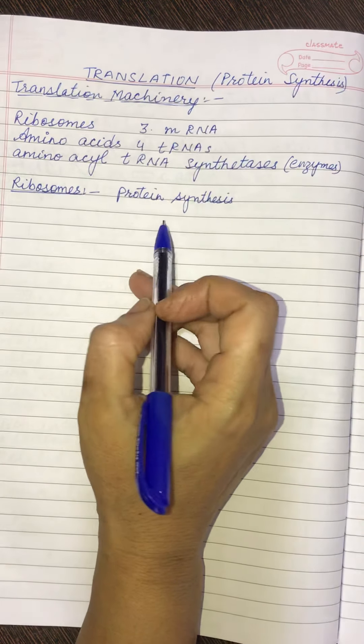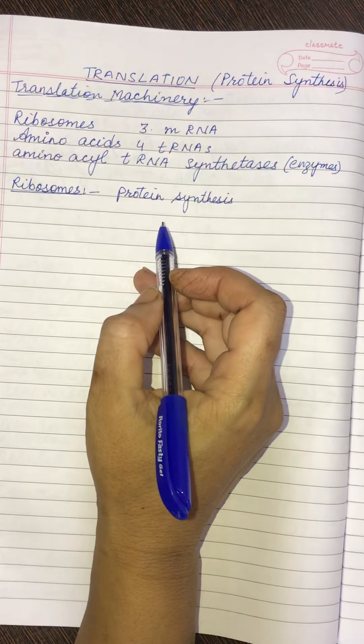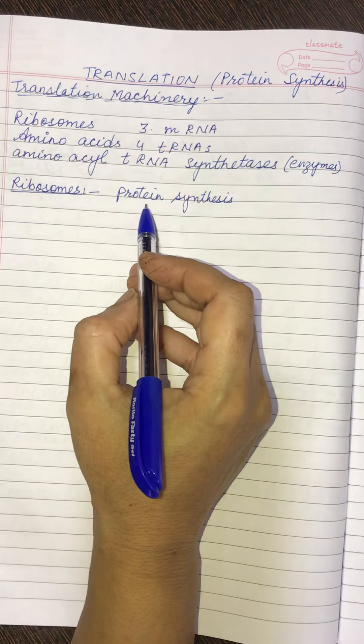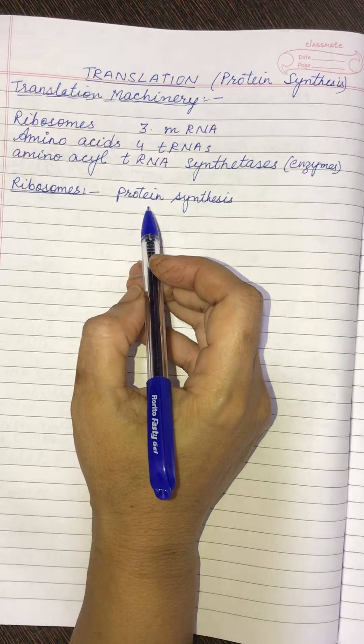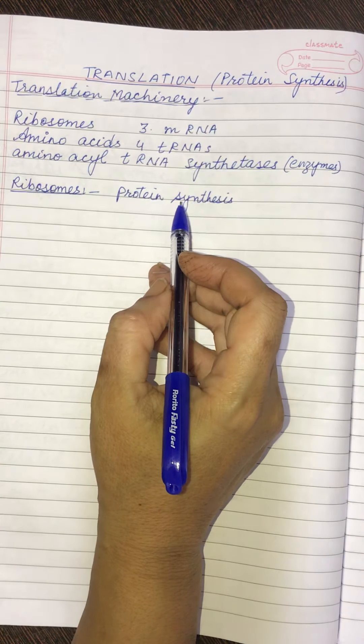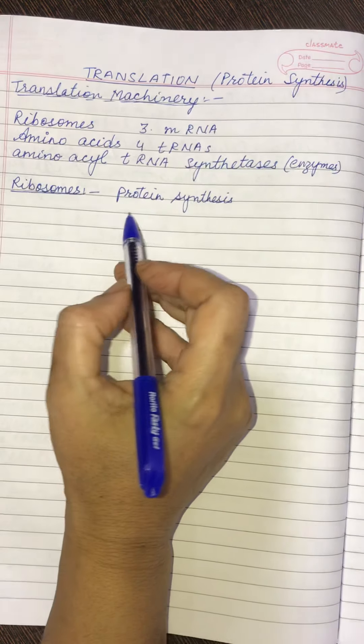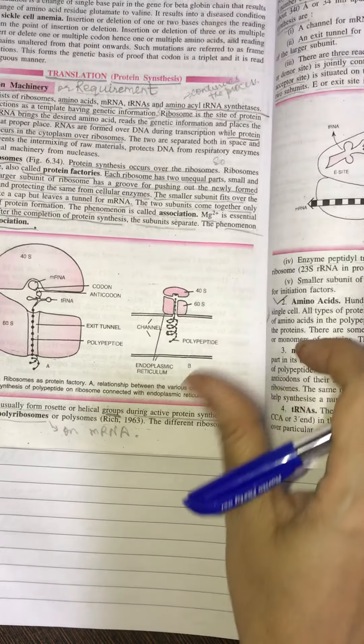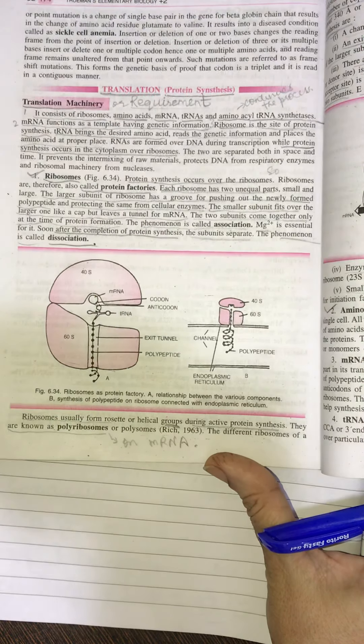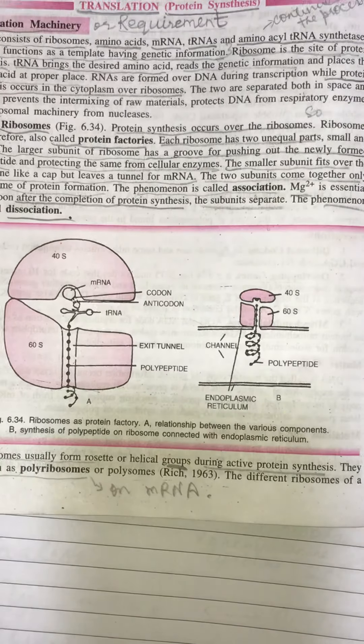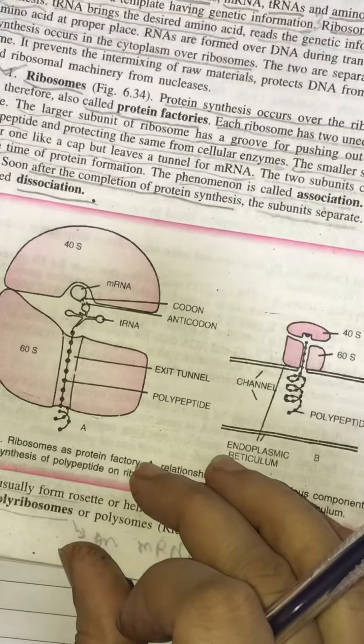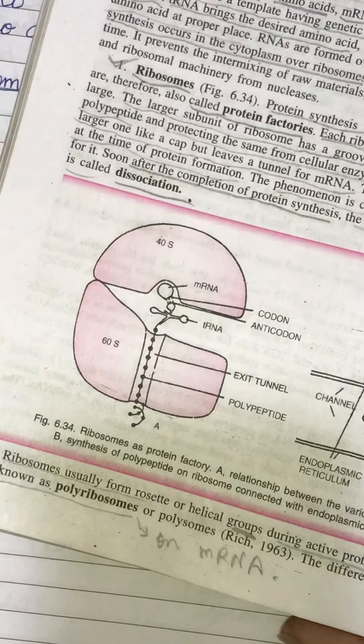Children, one by one we'll do their structure and how they are required in the mechanism. Number one is the ribosomes. Now these ribosomes, children, protein synthesis occurs over the ribosome. So they are the site of protein synthesis. That is why we also call them the protein factories. Now if I show you a diagram showing the structure of the ribosome, you will be very much clear about it. Concentrate on the diagram. I hope you are able to see it.